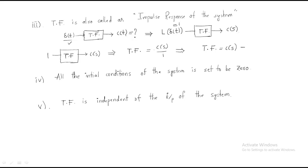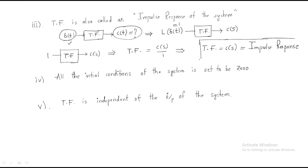What is C(s)? We are giving the impulse as input and we get output C(s). Impulse is the input, and the output of the impulse is called the impulse response. Therefore the transfer function equals the impulse response C(s) — that is why the transfer function is also known as the impulse response. This is the proof, and it is one of the important properties of the transfer function.